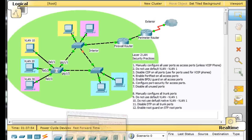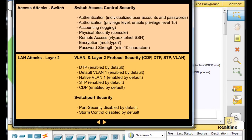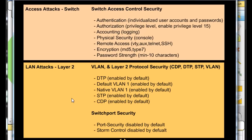When we're talking about switches, the types of attacks — first, we have access attacks to the switch. Switch access control security means authentication, which includes user accounts and passwords. Instead of having one admin user for the entire switch or router, it's best to have individualized user accounts and passwords. Then authorization levels — what are their privileges? Who has privilege level 15 for enable privileges to get to configuration modes on the switch? Is there logging enabled? This is AAA security.